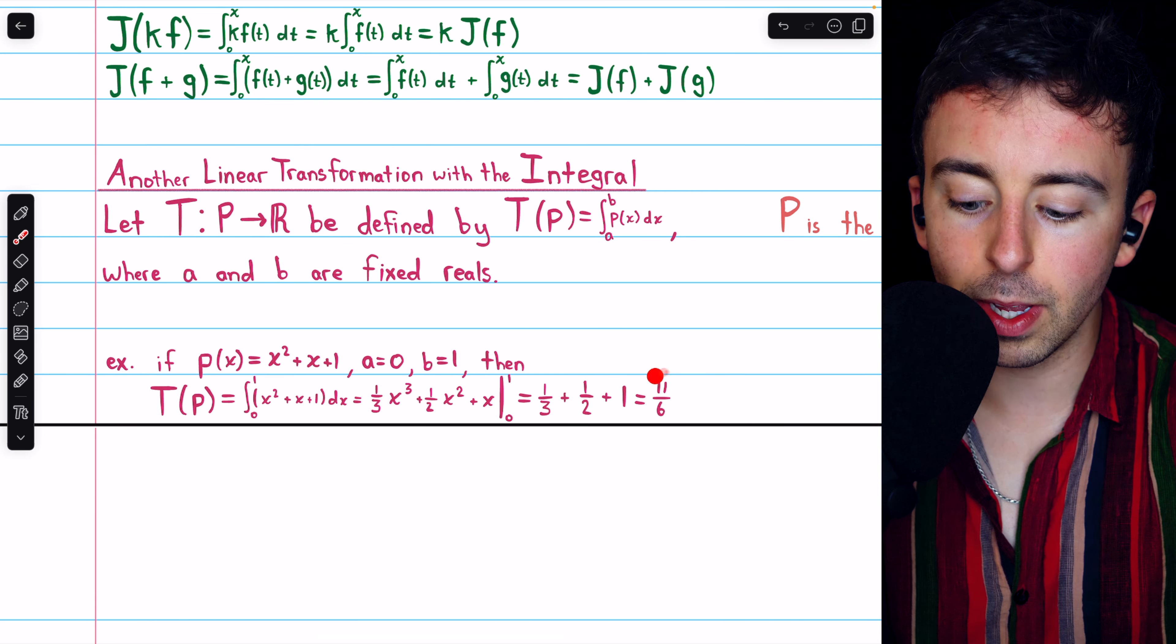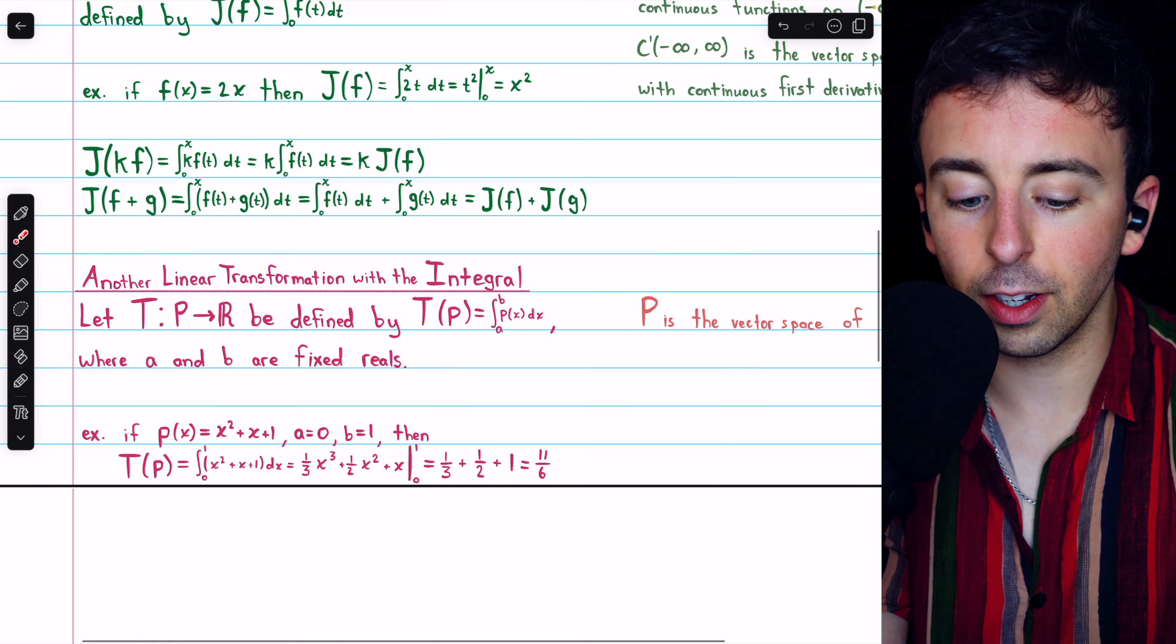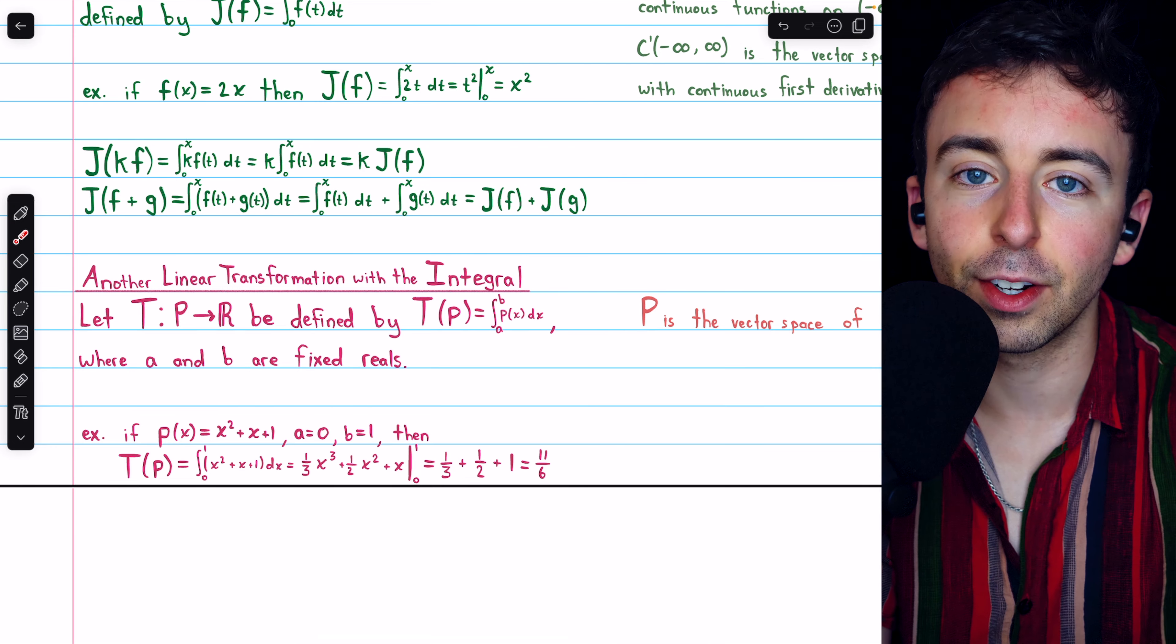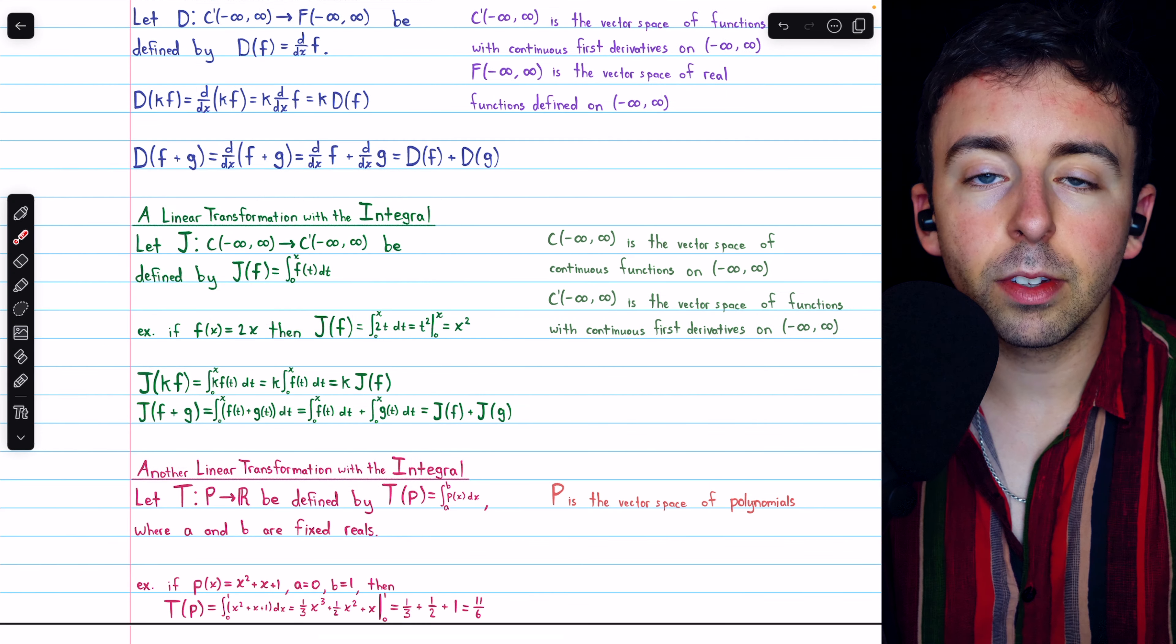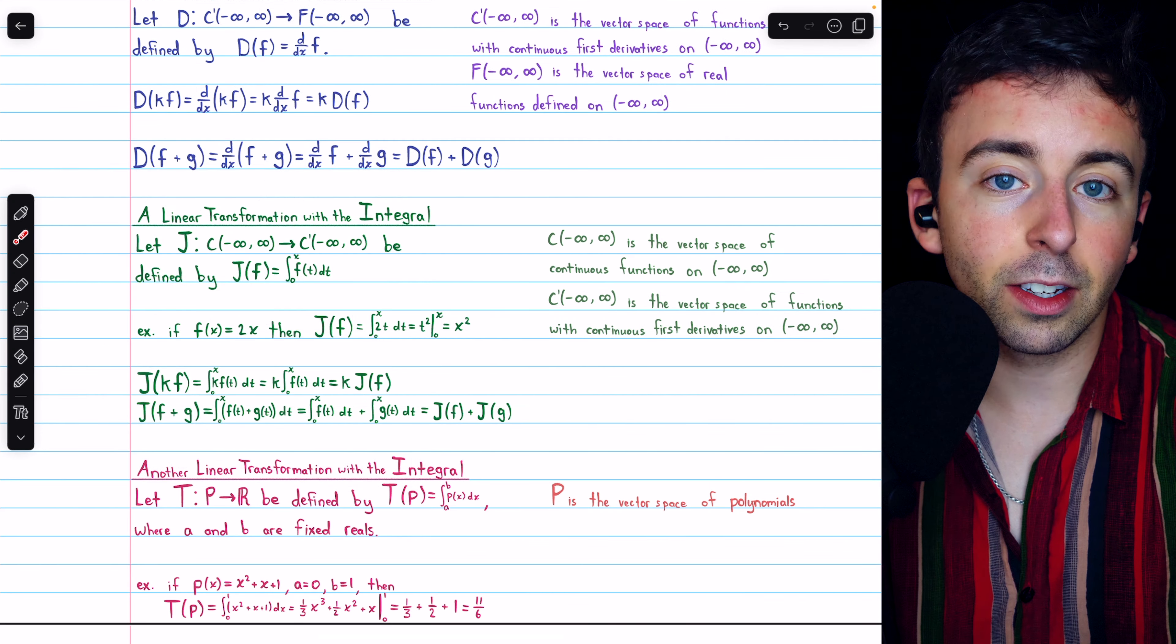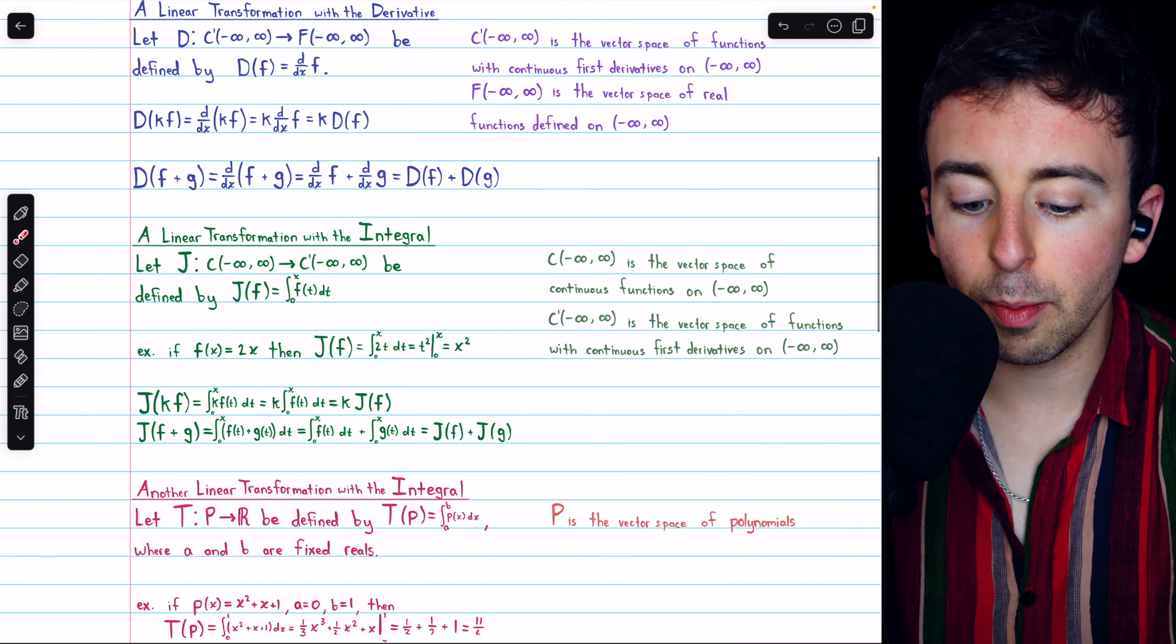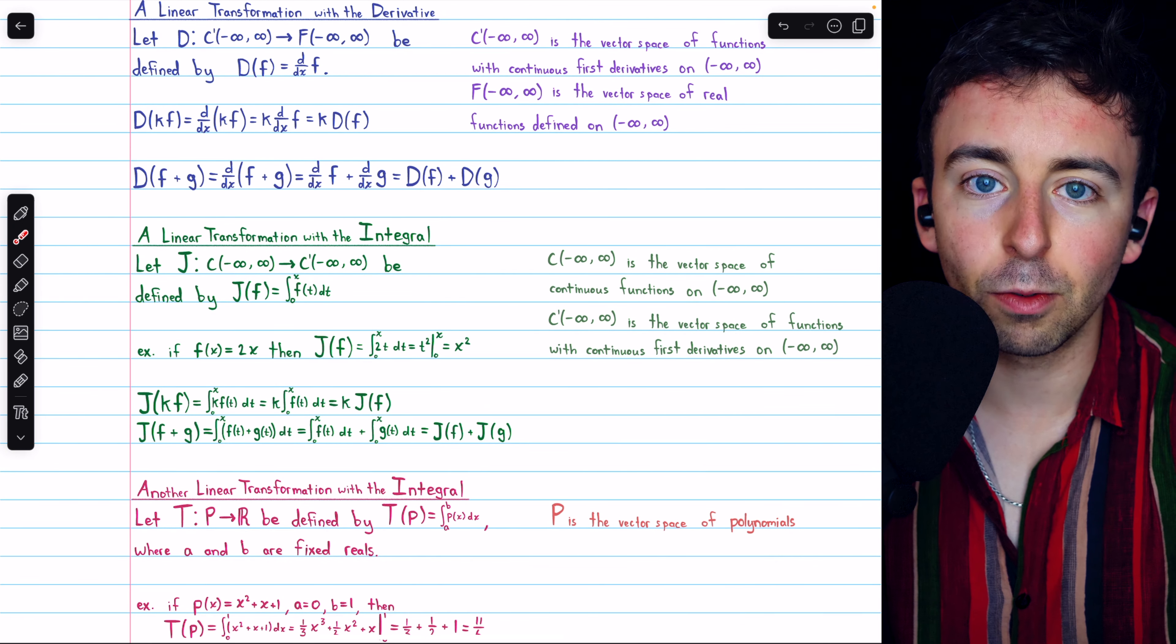The verification that this is indeed a linear transformation, of course, looks mostly identical to the previous verification. So I haven't written it out. But those are a few examples of how our familiar derivative and integration functions from calculus can be viewed as linear transformations between the proper vector spaces.